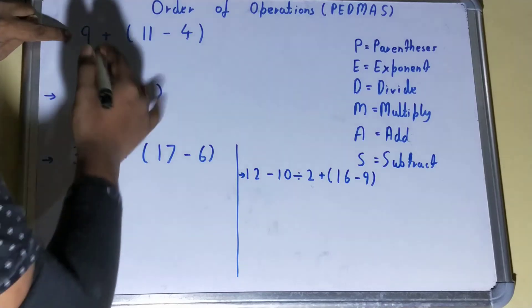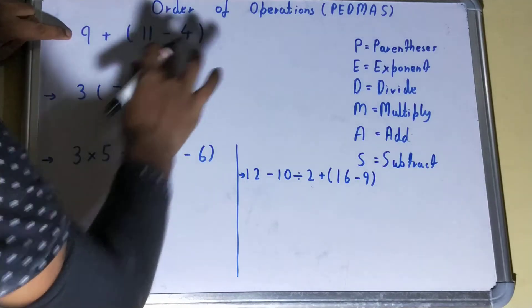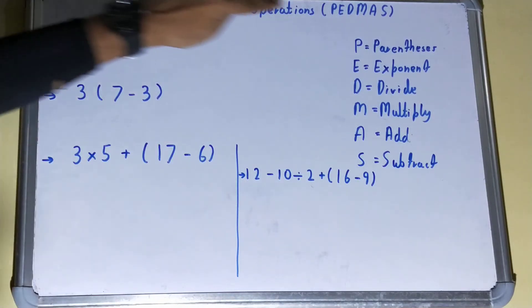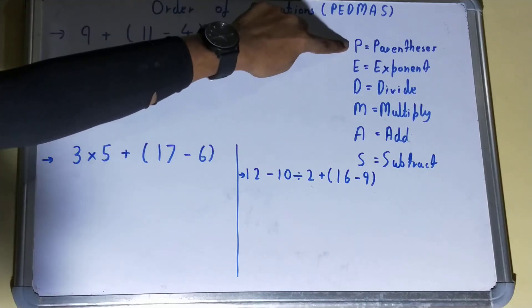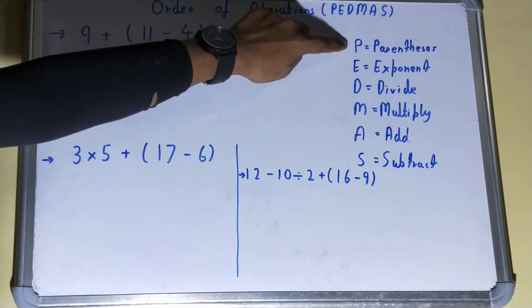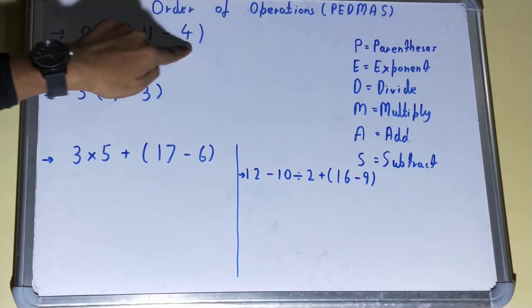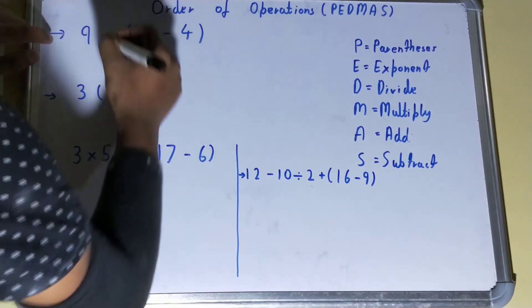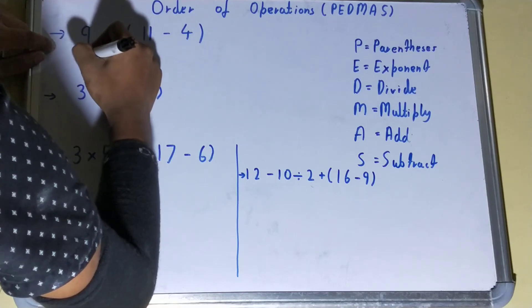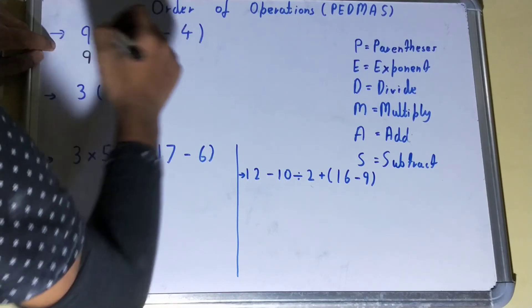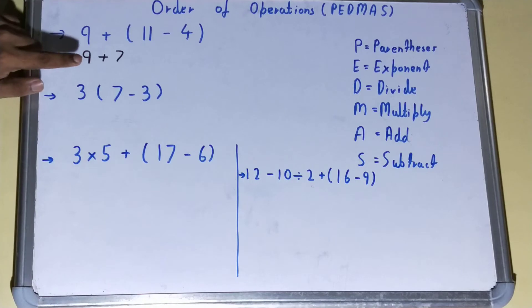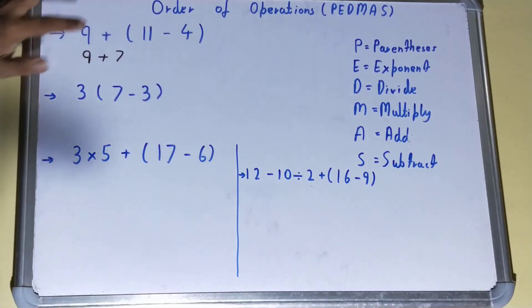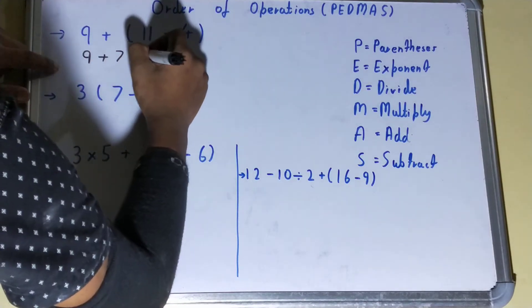So according to our PEDMAS rule, we should first do the parenthesis calculation. Inside the parenthesis we have 11 - 4, right? So we'll do that. We'll get it as 9 + 7. Now we have no other sign, so we can just do the normal addition. We'll get it as 16.